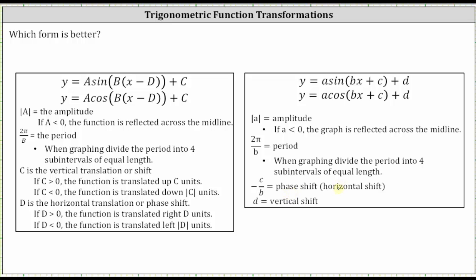Finally, for the vertical translation or shift, indicated by the constant on the end: in factored form we have plus c, so if c is positive the function is translated up c units, and if we have subtraction or c is negative, the function is translated down the absolute value of c units. Similarly for the expanded form, we look at the value of d — if d is positive the graph is shifted up d units, and if d is negative the graph is shifted down the absolute value of d units.